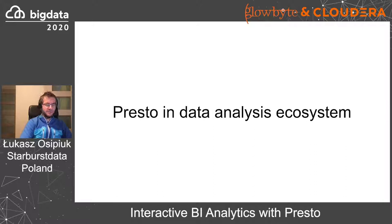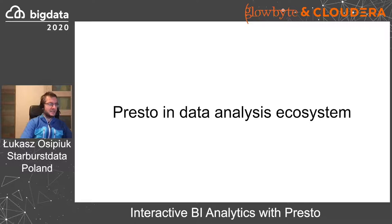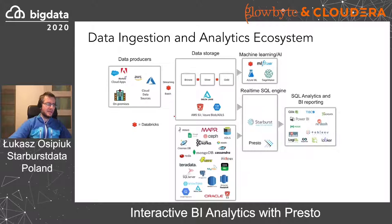Now that we have a high-level understanding of what Presto is and what data sources it can consume, let's look at a broader picture of the data analysis ecosystem and see where Presto lies in it. The diagram on the slide shows a synthetic data analysis ecosystem. Going from the left, we have data producers — essentially any applications that ingest data into the system. Those can be, for example, IoT data read from sensors, web logs, financial transactions, etc.